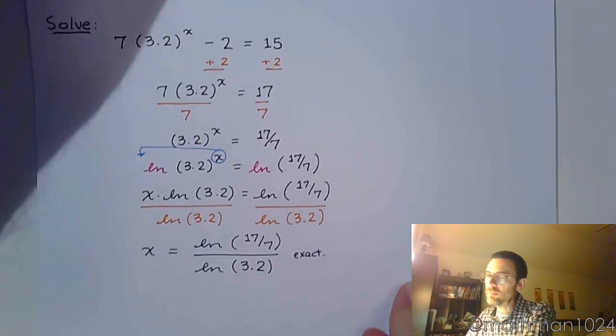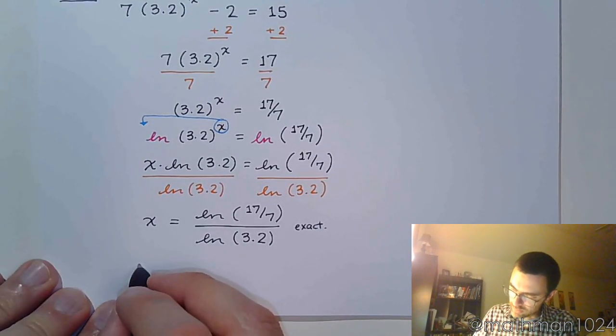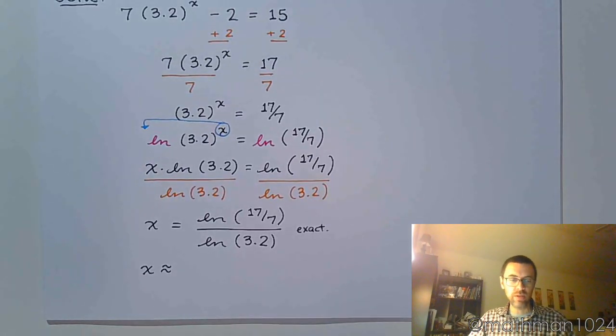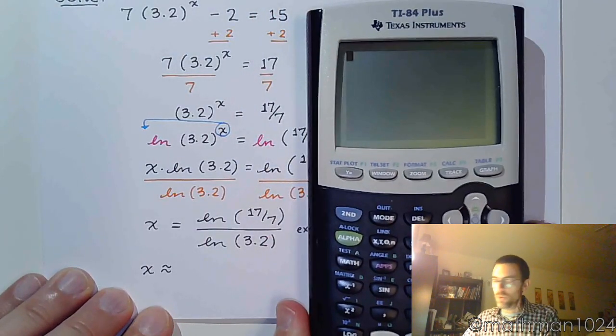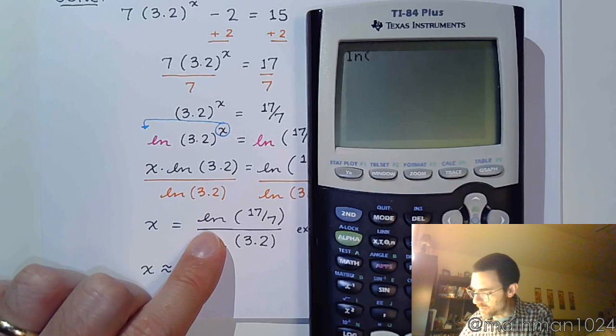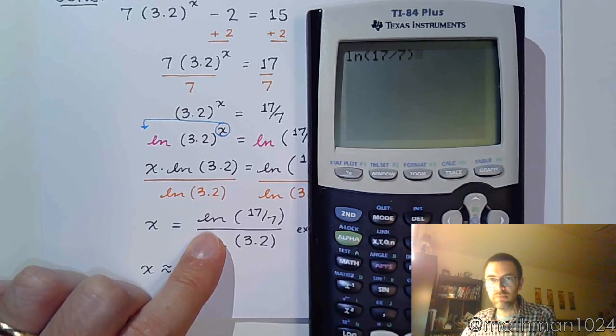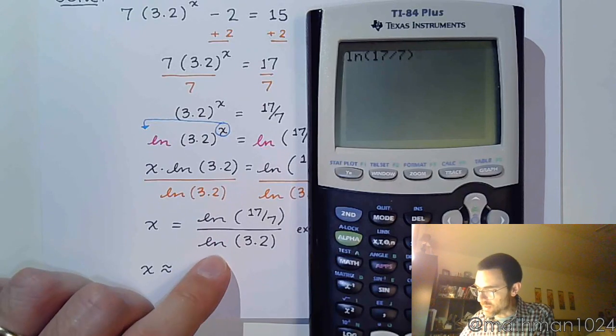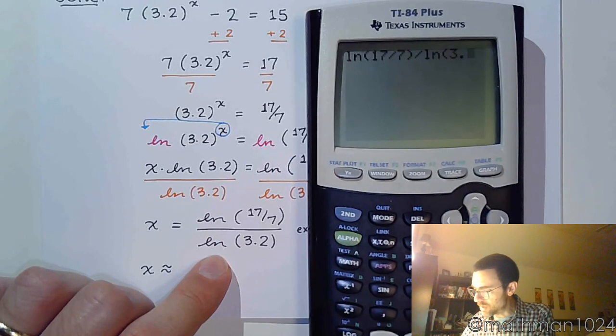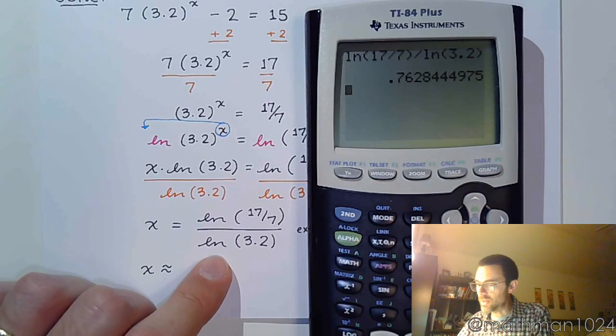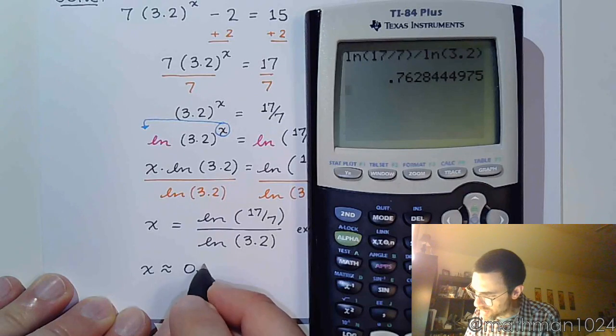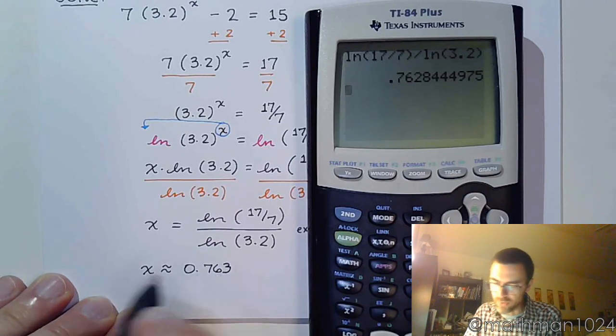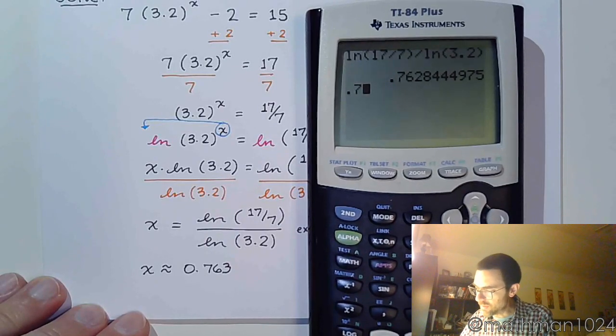And now, we want to turn this into an approximation. So we're going back to our calculator. We want to do the natural log of 17 divided by 7, close parentheses, divided by the natural log of 3.2, and I get this answer. Alright, so you know what, this is, what is that, 0.763 when I round that. So 0.763.